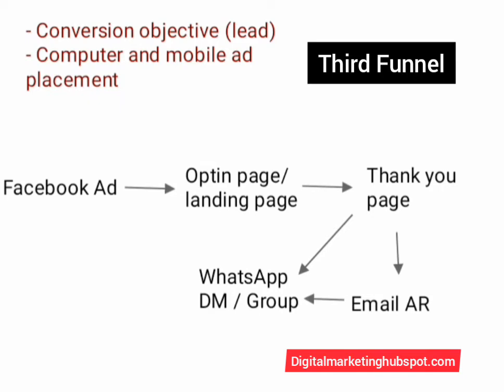If you are working with this funnel, you must have a landing page, a thank you page, and an autoresponder. From Facebook to your opt-in page — also called a squeeze page or landing page — then to your thank you page where you give them a link to your WhatsApp to get whatever you promised. Also, once their data is sent to your email autoresponder, it sends them a follow-up email with a link to click, which brings them to your WhatsApp or WhatsApp group.